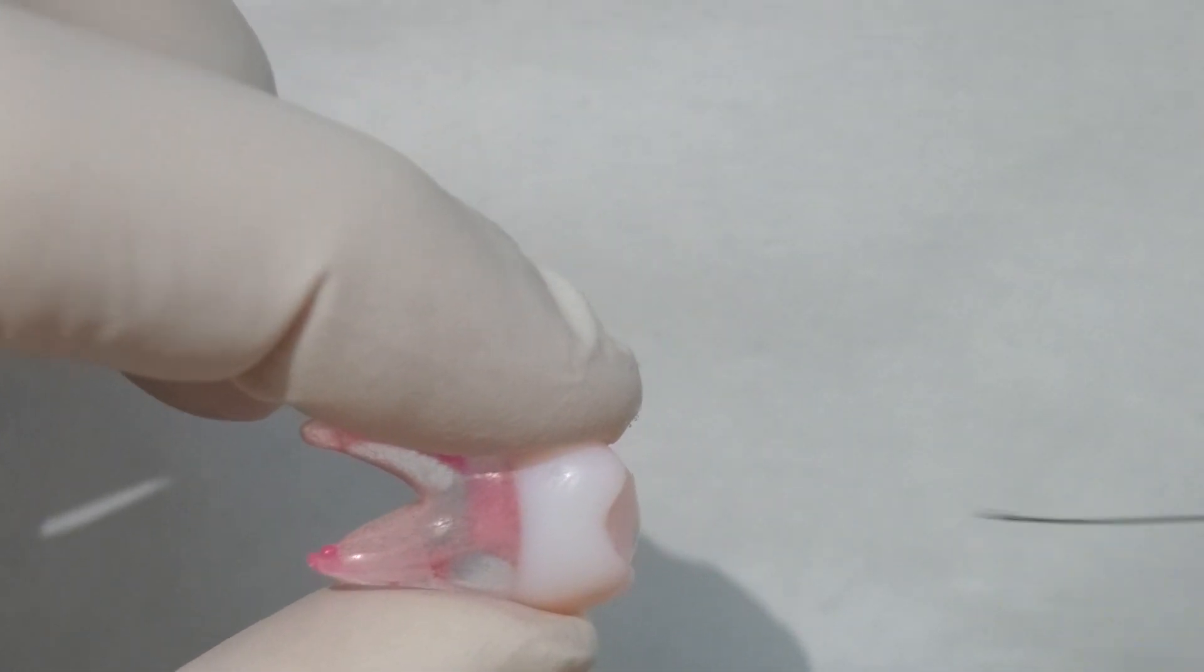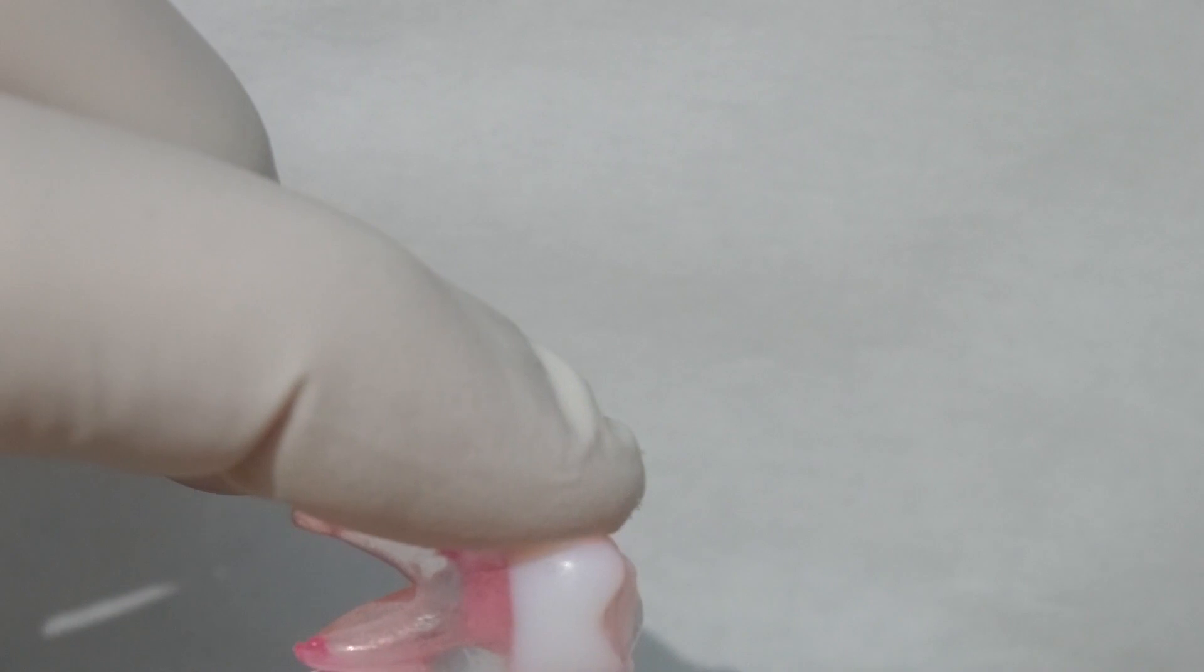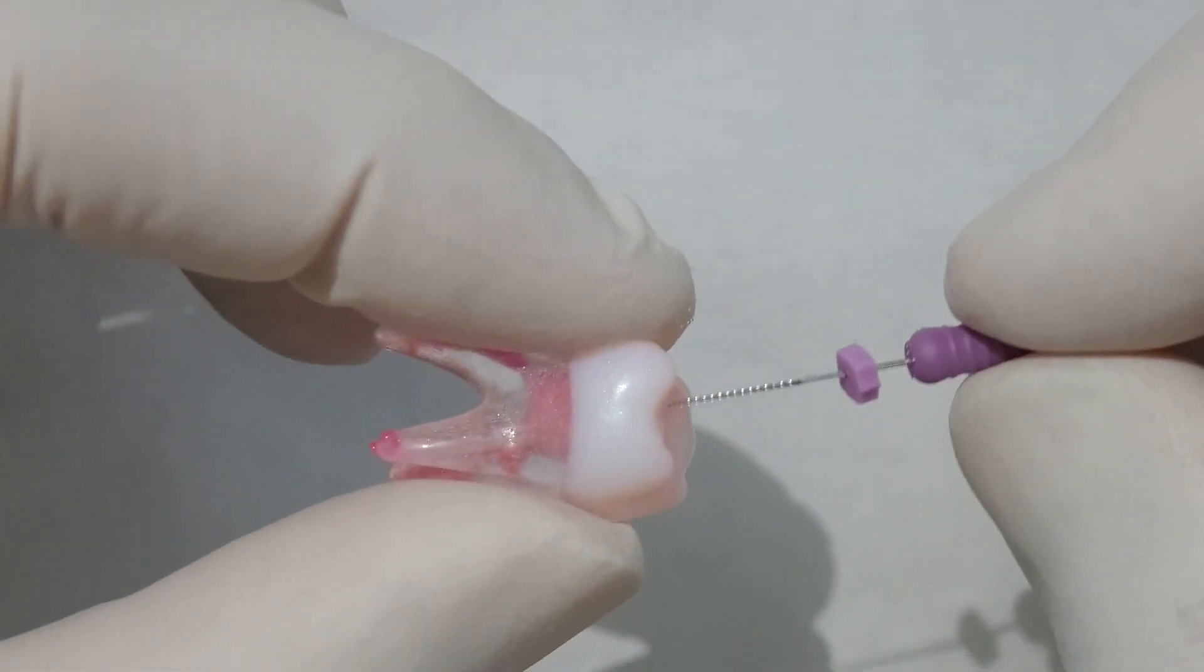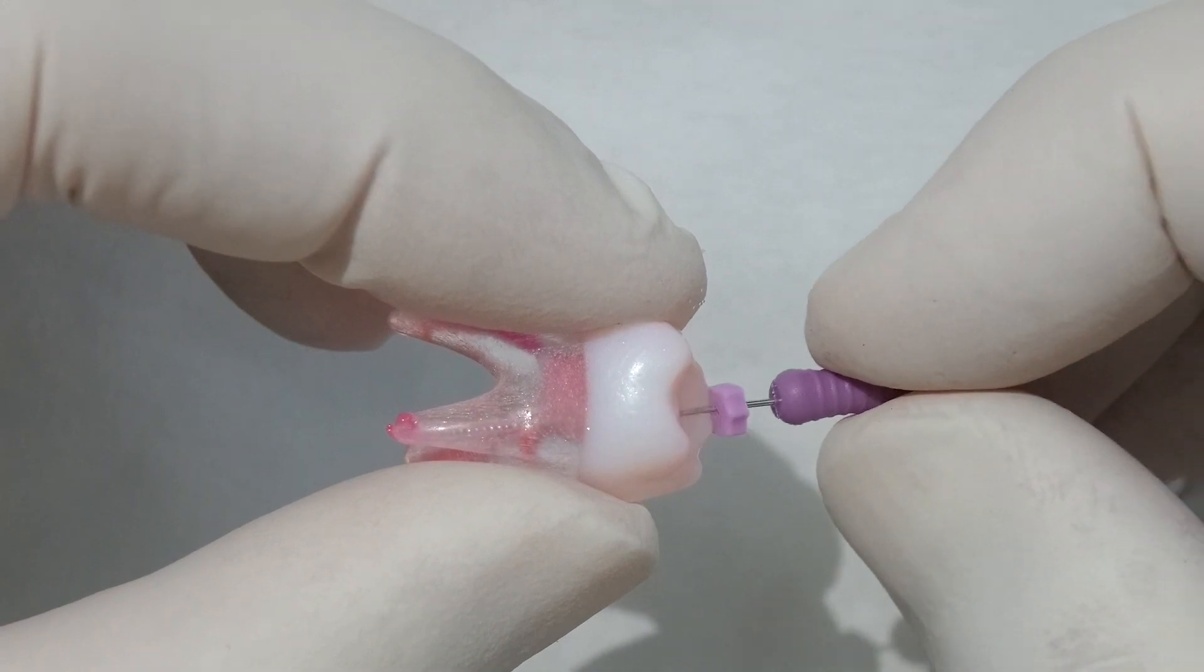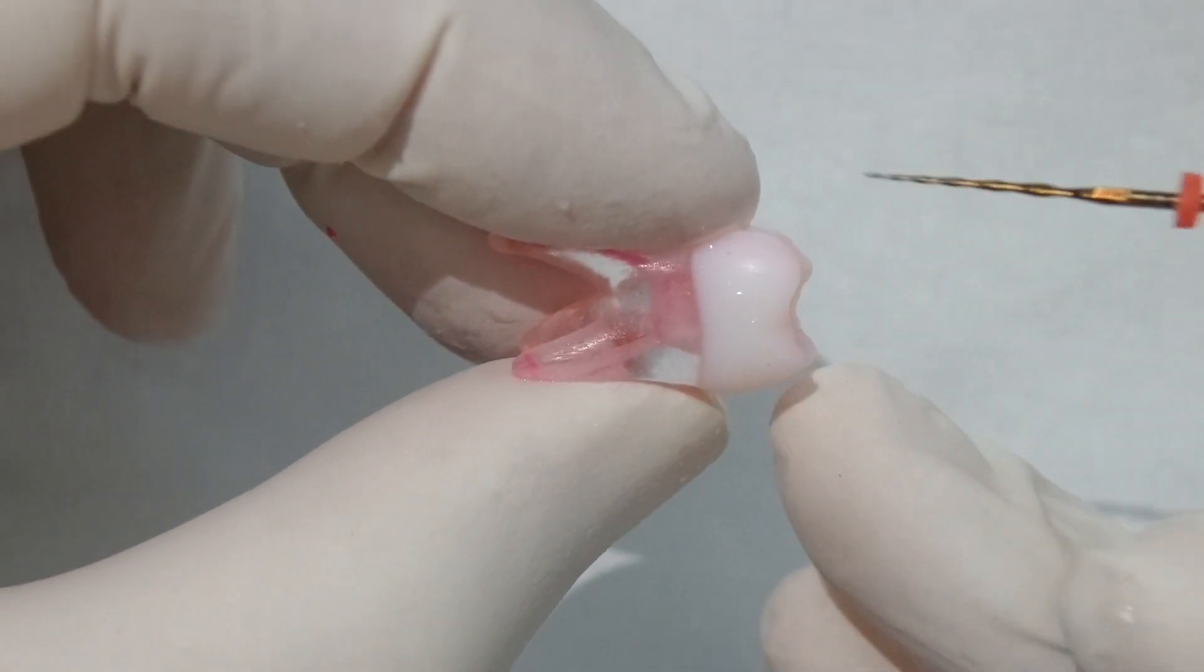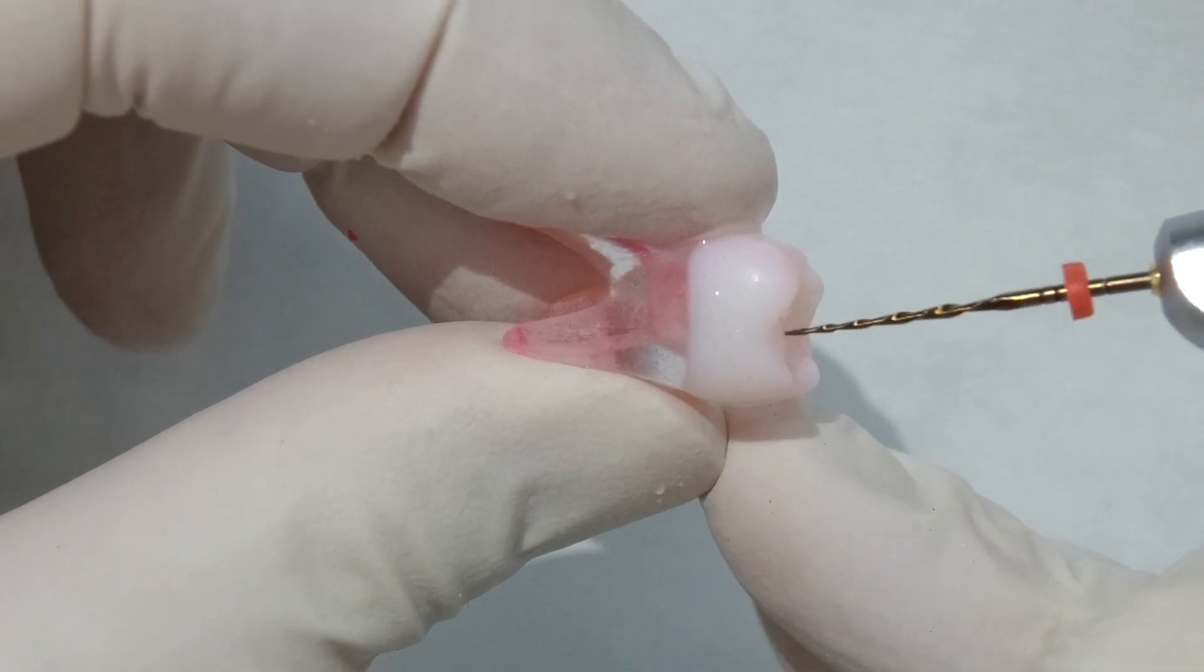But we're just going to irrigate. We don't leave that file in there for too long, because it can create loads of debris. So we irrigate. We make sure it's patent again. Get that size 10. Again, measure to that zero point. Just bounce that in there. Make sure not much resistance to that now, because we've done a nice bit of shaping already.